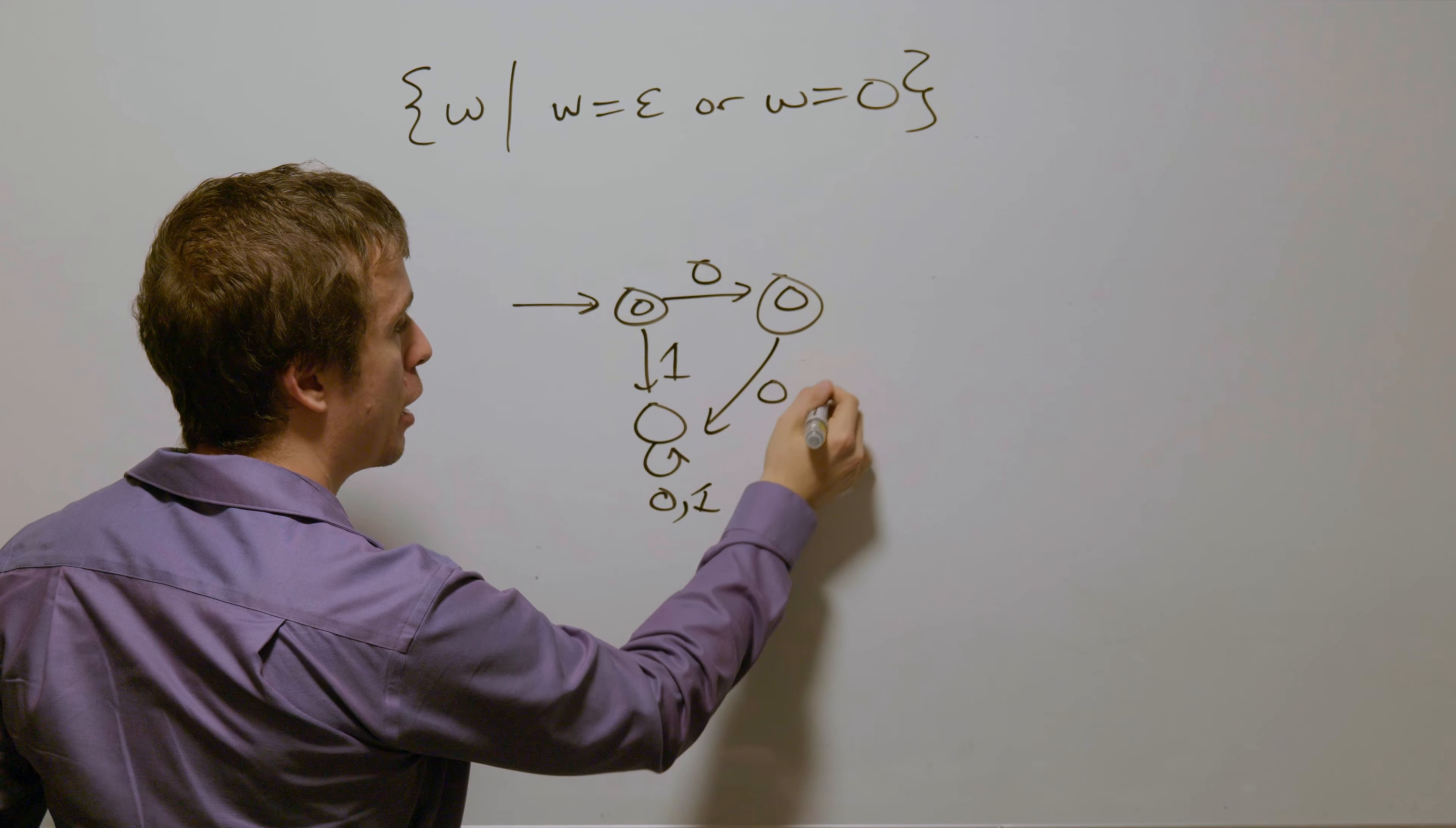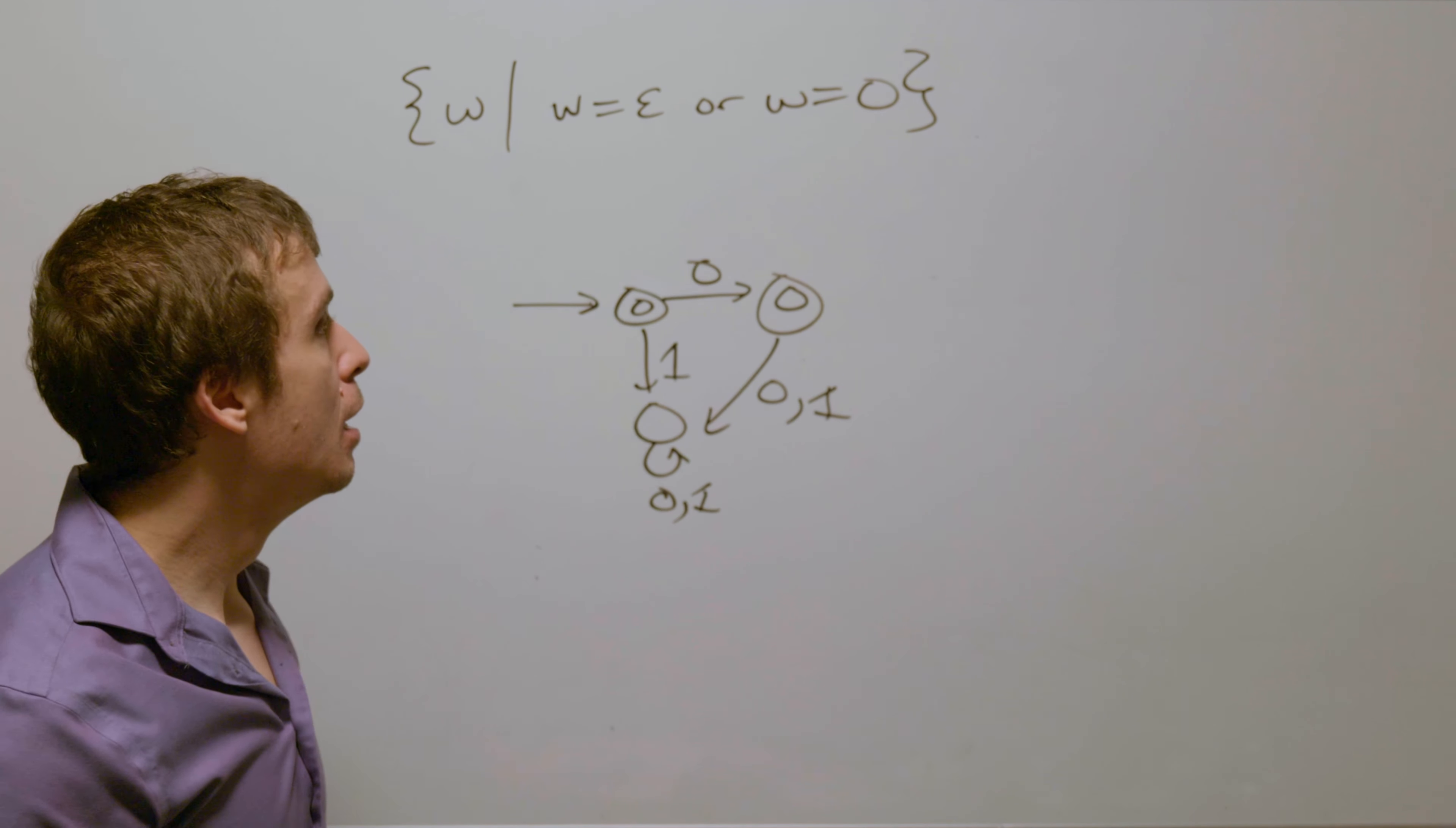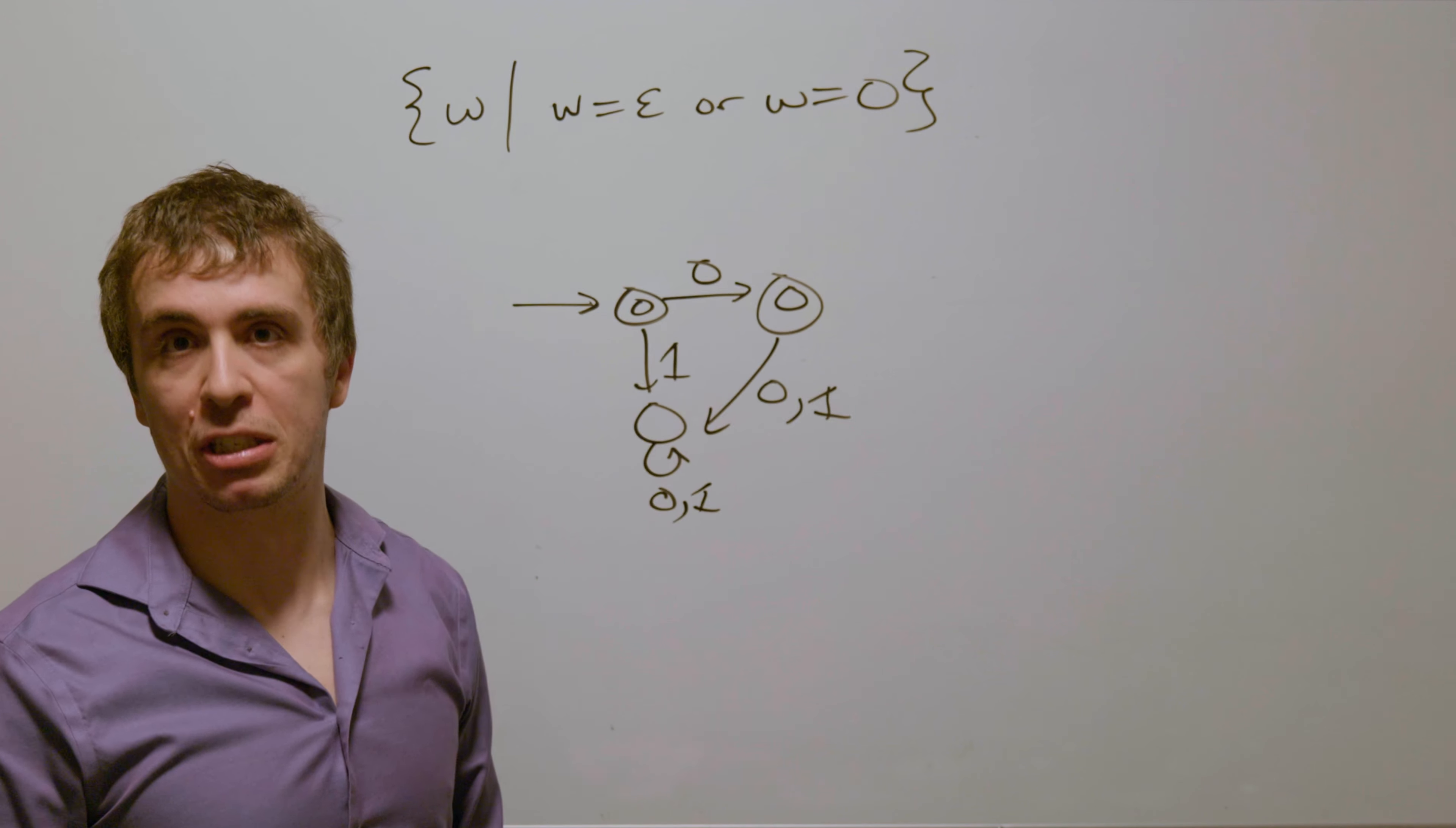So therefore, we need to go to that state on literally every character, which is zero and one in this case. So therefore, this is a deterministic finite automaton for the very tiny language of the empty string and the string zero.